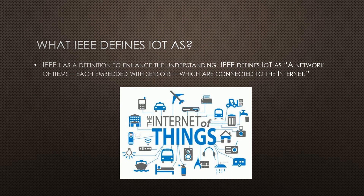IEEE defines IoT in a very simple and efficient way. They say that it is nothing but a network of items, each embedded with sensors, which are connected to the internet. They made it very simple — they say that we have a network of things, each of these things will have a sensor, and all of them are connected to the internet. This is essentially what we convey, but perhaps using different words.